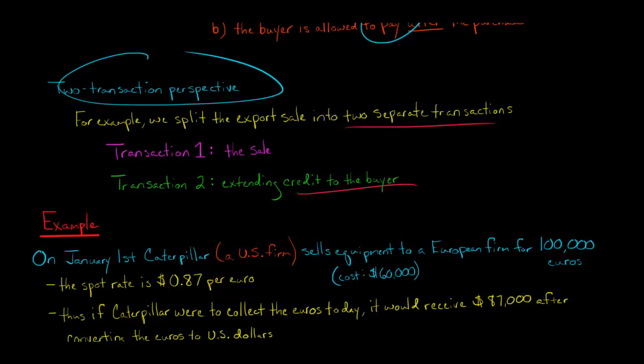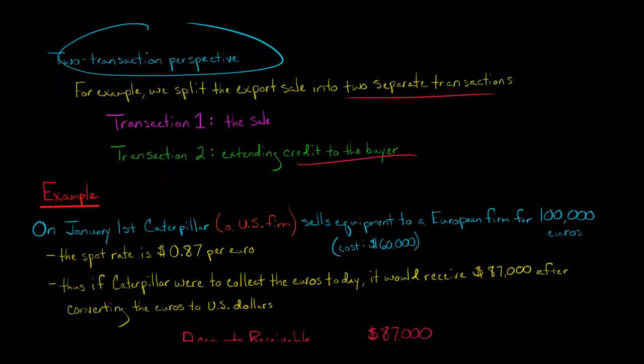you could get one euro. So that's our exchange rate, our spot rate the day of the sale. And so hypothetically, if Caterpillar on January 1st was able to collect all 100,000 euros, they would get $87,000 U.S. dollars, because they would basically immediately convert the euros to U.S. dollars. And we wouldn't have a foreign currency gain or loss because they're just immediately converting from euros to dollars.